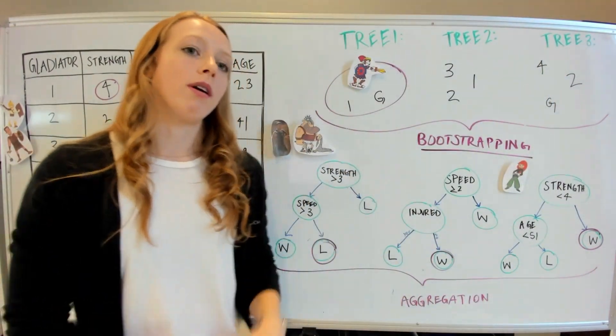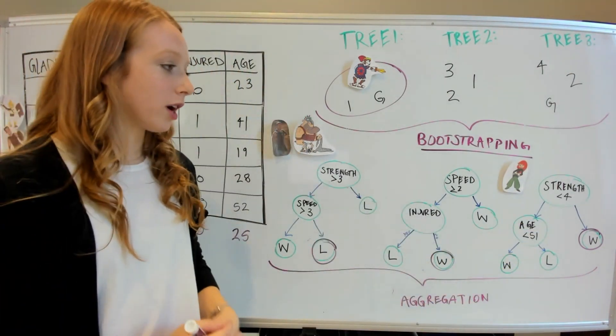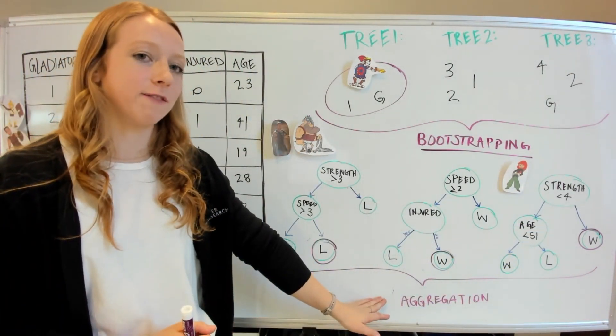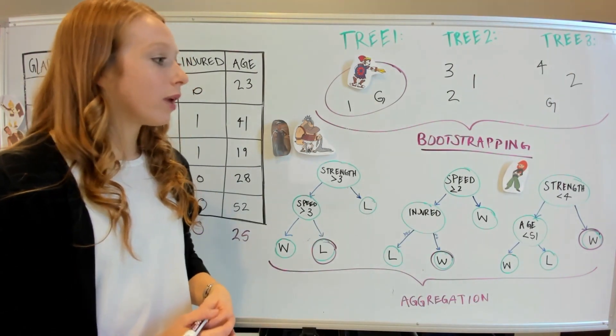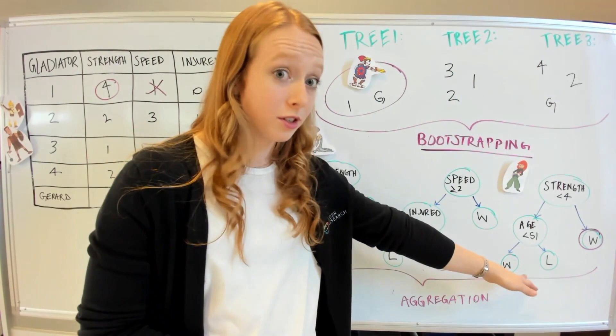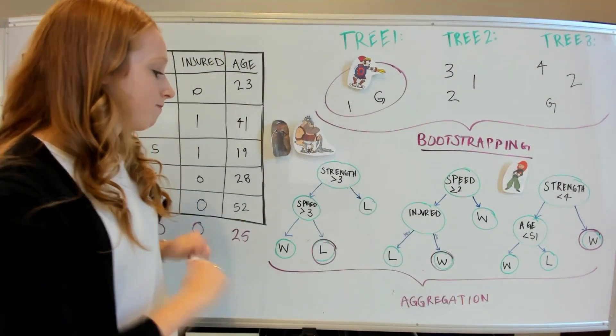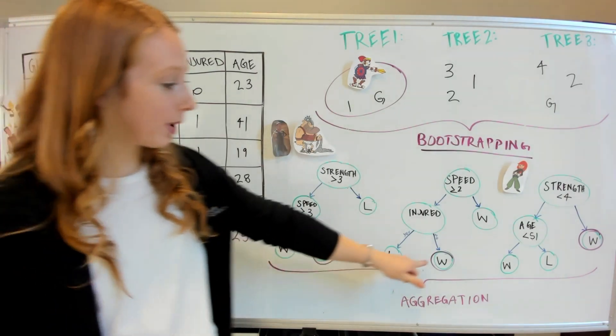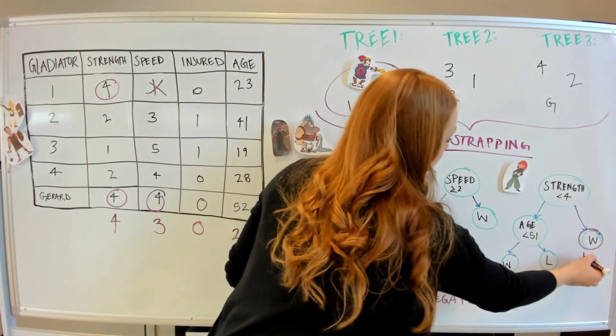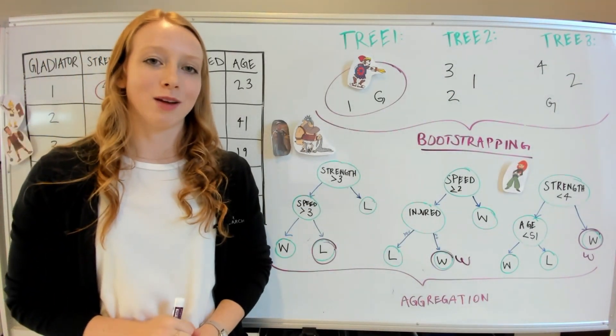Once this new data point has gone through each of the decision trees, we'll use a process called aggregation to assess the final outcome. What I mean by this is we'll take the majority of the outputs from the decision trees evaluated, and that will be the final outcome. So I didn't win the first one, but I won the second two. To me, it sounds like I have a pretty good chance in the gladiator games.